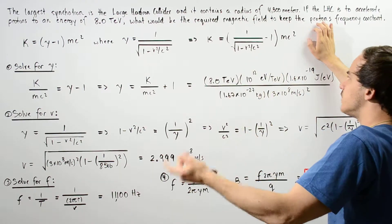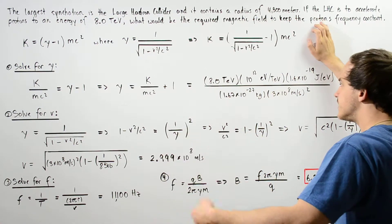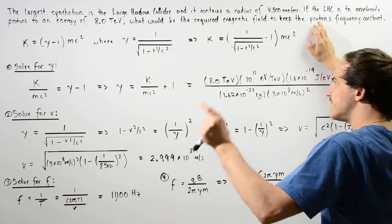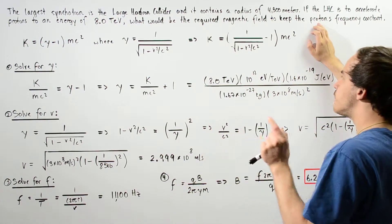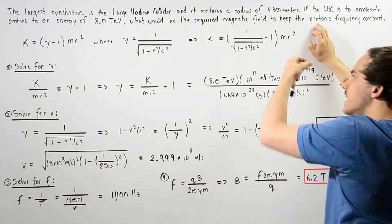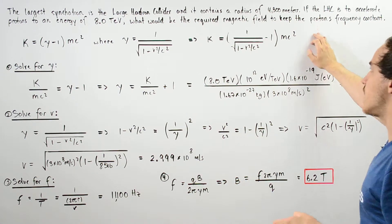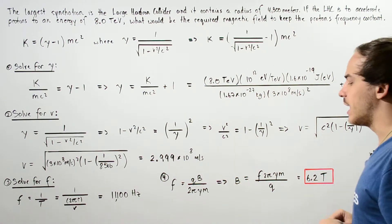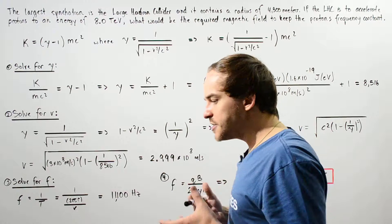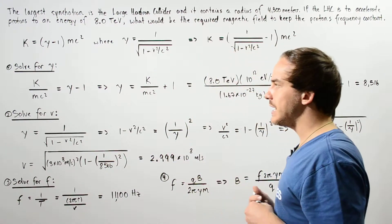C is the speed of light in a vacuum, 3 times 10 to the 8 meters per second. V is the velocity of the particle, which we don't know. M is the mass of the proton, and C once again is the speed of light in a vacuum.